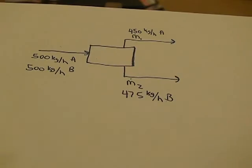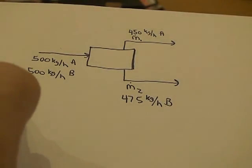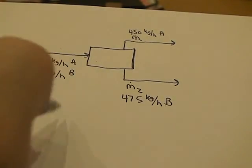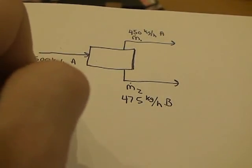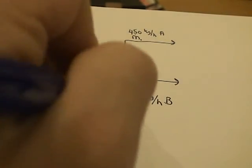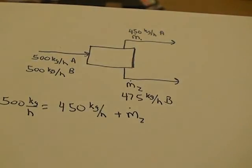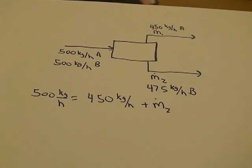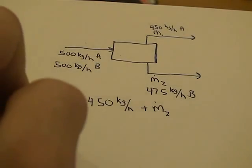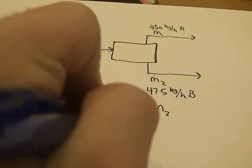So, we do two species balances. We have the first, which is A, which says that we have 500 kilograms per hour equals 450 kilograms per hour plus M2. Well, we can solve for M2 here, really easy, to find that it equals 50 kilograms per hour.